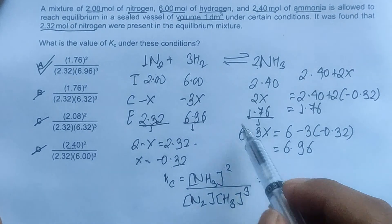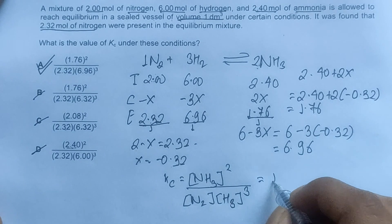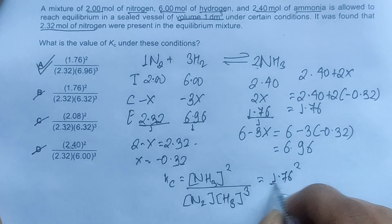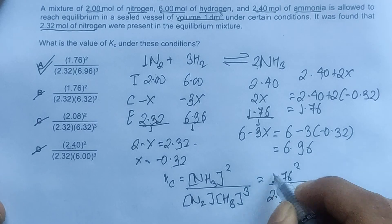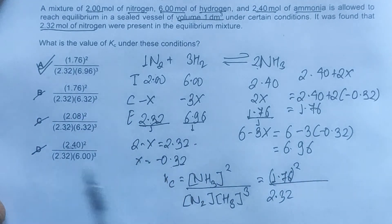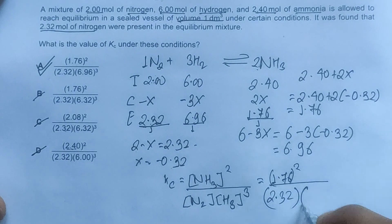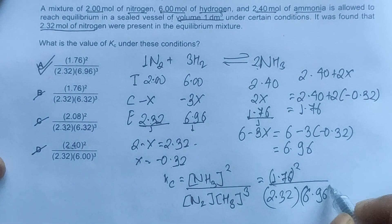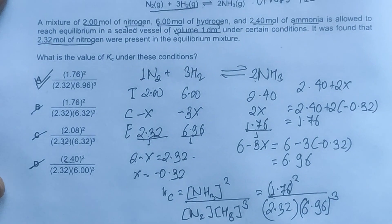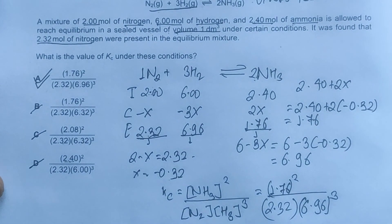Concentration of nitrogen is 2.32. Since all options are given in brackets, we'll use brackets as well: 2.32 multiplied by concentration of hydrogen is 6.96 cubed. So it confirms that A is our correct answer.